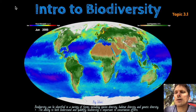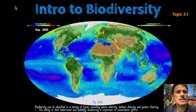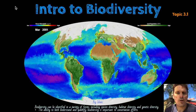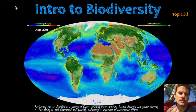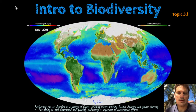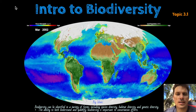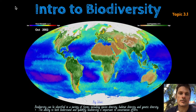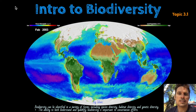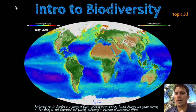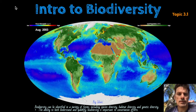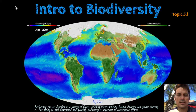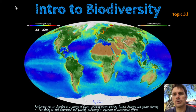Hello and welcome to a quick unit on topic 3.1 for our ESS class looking at biodiversity. Here's an image of the world in monthly time-lapse over many years. You can get images like this on nasa.gov and it shows life changing on this planet significantly depending on the season, the time of year. The green represents a lot of plants and white represents ice, and you see biodiversity in oceans and on land as well.